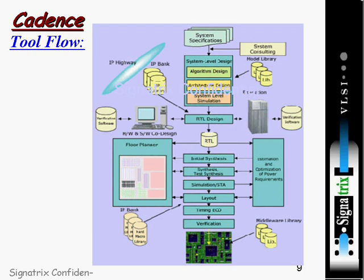Then you perform RTL design, followed by power optimization, floor planning, synthesis, test synthesis, simulation, STA, layout, timing ECO, and verification. That is the overall flow — now let's look at what specific tools are used at each stage.